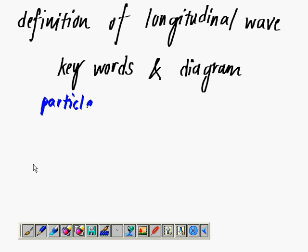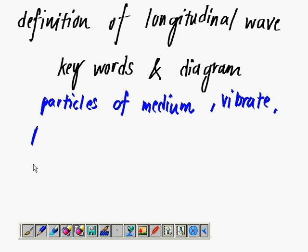So the keywords to define longitudinal wave, we can use the keyword of particles of medium, vibrate or oscillate, in parallel, parallel to the direction of the wave propagation.